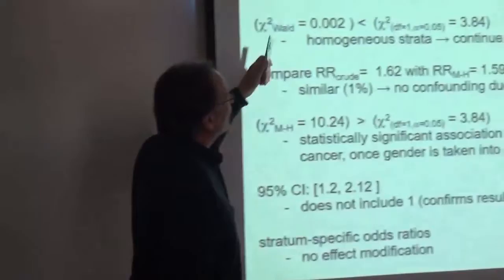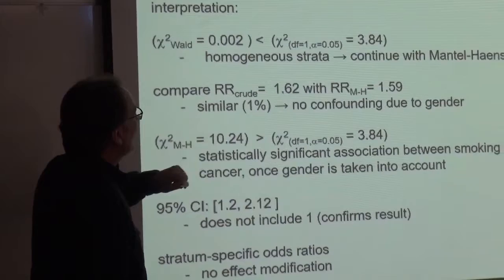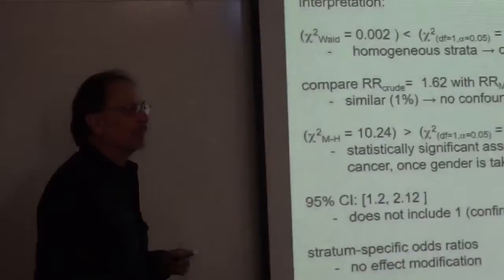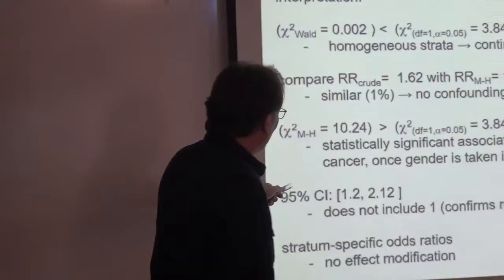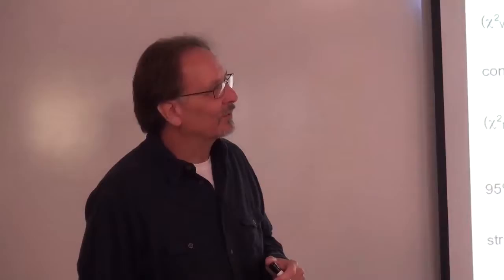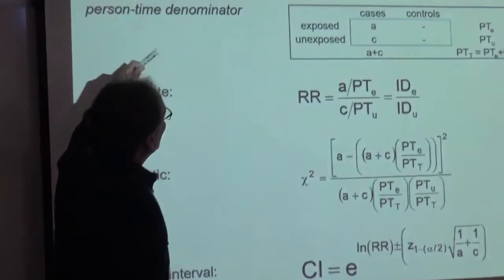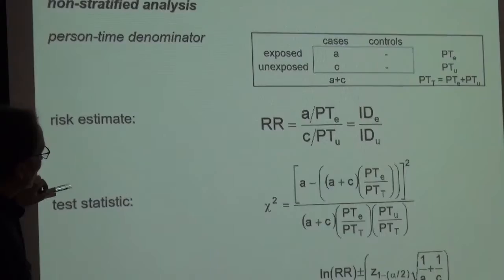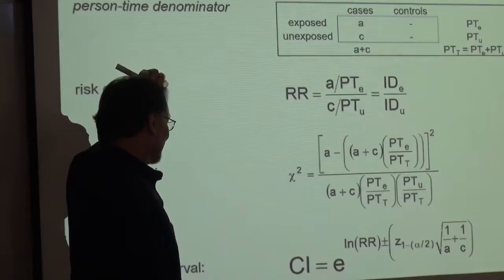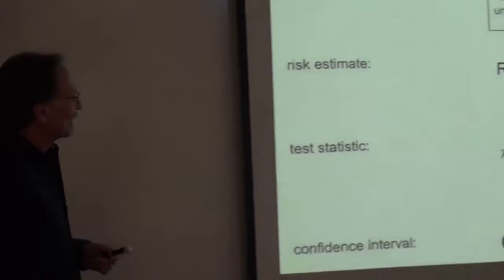This is a person-time denominator. Looking at our evaluation: homogeneous, Mantel-Haenszel, delta percent is one percent — so no confounding due to gender. There's a significantly elevated risk associated with smoking even adjusting for gender, confirmed by the confidence interval. There's apparently no effect modification because the risk for males and the risk for females is virtually identical — 1.59 versus 1.61. For a non-stratified analysis, the risk estimate uses a slightly different test statistic for incidence density, but it's still very similar.